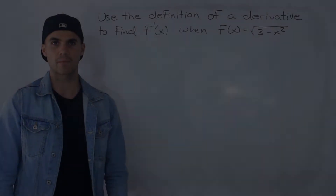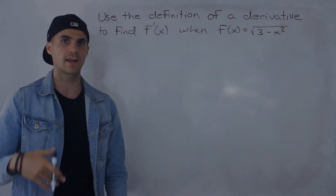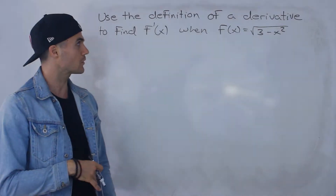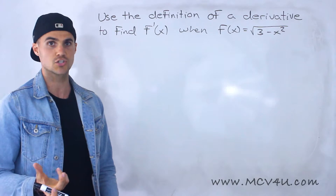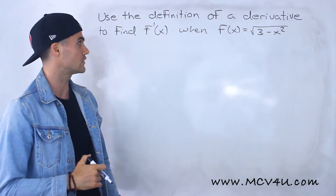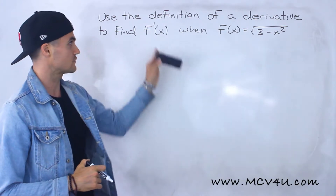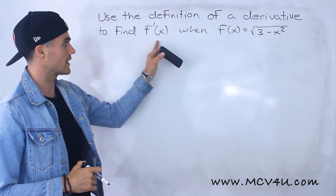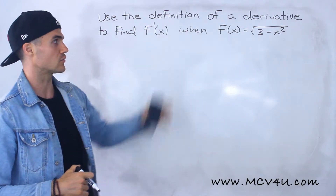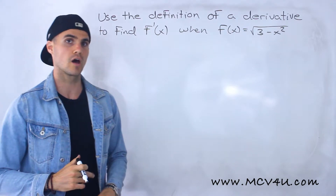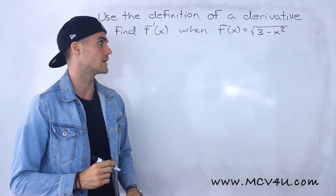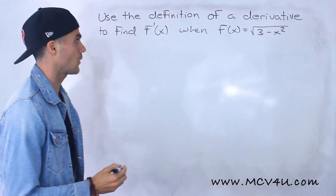Welcome back. Patrick here and in this video what we're going to do is use the definition of a derivative to find f prime x, or the derivative, when the function is the square root of 3 minus x squared.